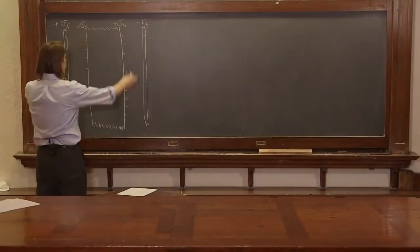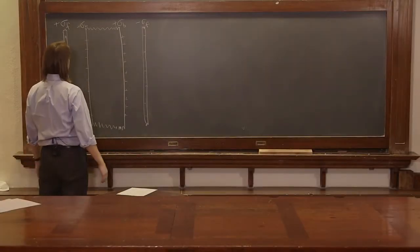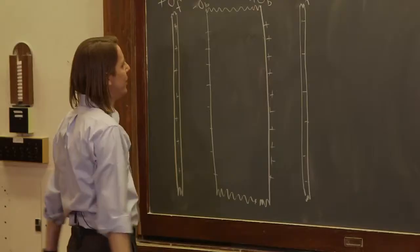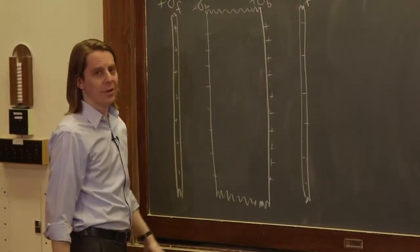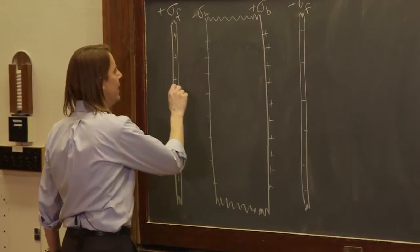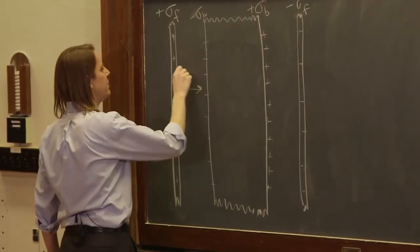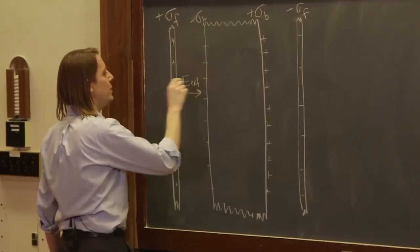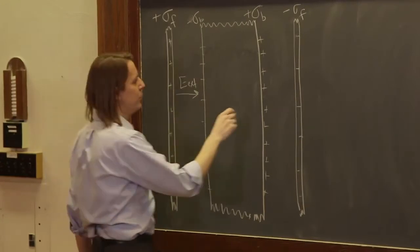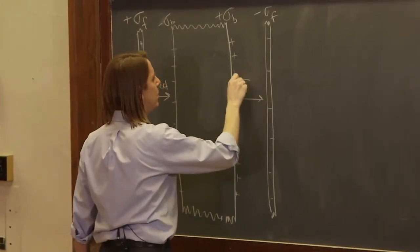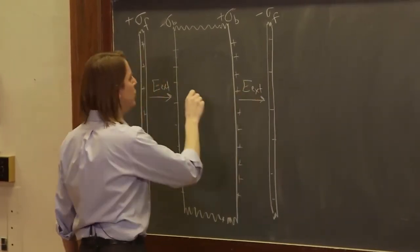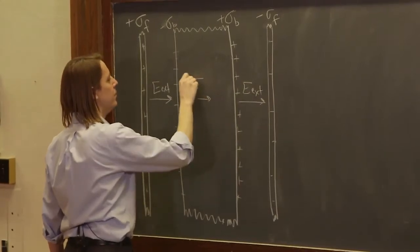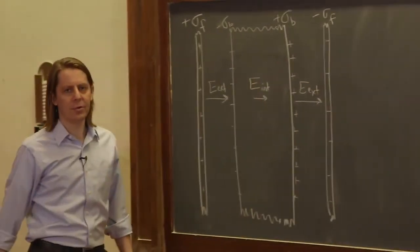So we seem to be making some progress here. The free charge creates an electric field. The electric field perturbs the dielectric material, creates bound charge on its surface, and the fields change from the external field, which in this case remains constant, will not always remain constant, in the gap to a somewhat reduced field inside the dielectric.